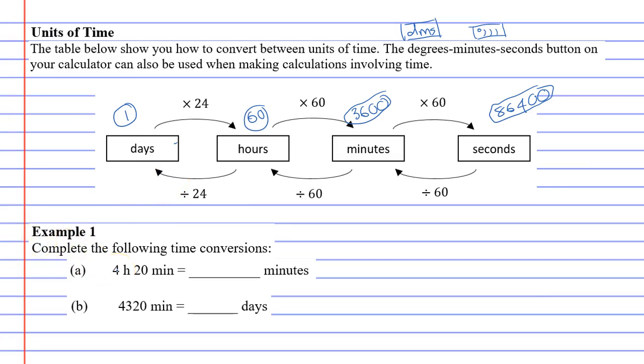We're going to complete two questions. The first one wants us to convert 4 hours and 20 minutes into minutes. You'll notice they've already given us the 20 which is in minutes, but the 4 hours is not. So we'll take that number 4 and convert 4 hours into minutes.